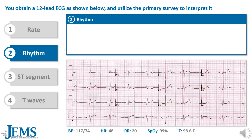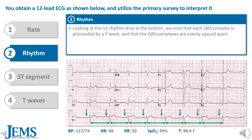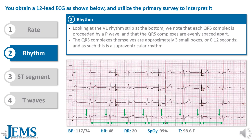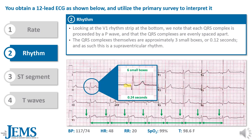Next, let's look at the rhythm. Looking at the V1 rhythm strip at the bottom, we note that each QRS complex is preceded by a P wave and that the QRS complexes are evenly spaced apart. The QRS complexes themselves are approximately 3 small boxes, or 0.12 seconds, and as such, this is a supraventricular rhythm. Of note, the PR interval of 0.24 seconds represents a borderline first-degree AV block.